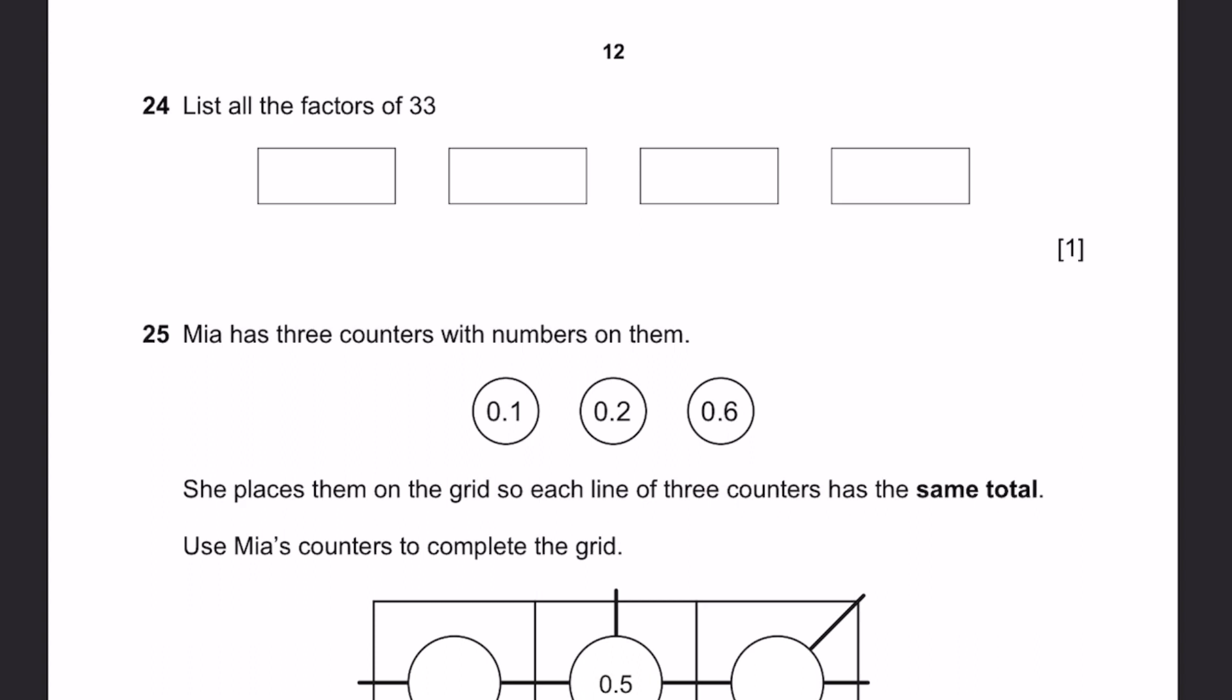Question 24. List all the factors of 33. That would be 1 and 33, obviously. I'm writing like this because I want to write in ascending order. 33 can also be 3 into 11, so these are also two factors.